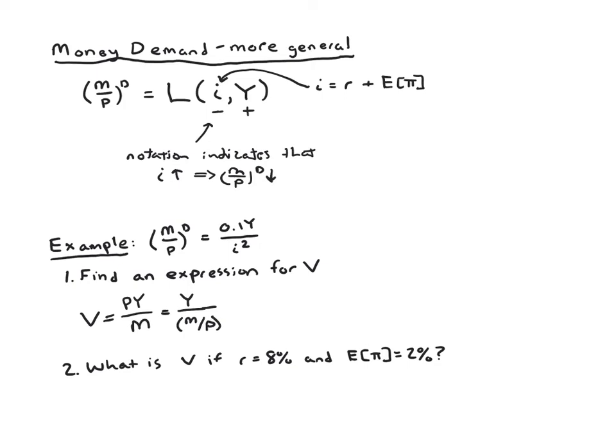So now we can plug in for M over P. We have real money demand and real money demand in equilibrium will equal real money supply. So we'll plug in. We have Y divided by 0.1 Y divided by I squared. The Ys cancel. So we get 1 over 0.1 I squared. And then when you divide by a fraction, you sort of multiply by the reciprocal. So hopefully you remember this is going to work out to being 10I squared.